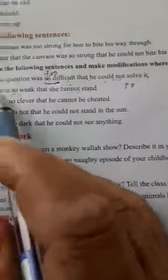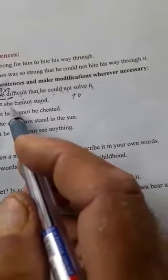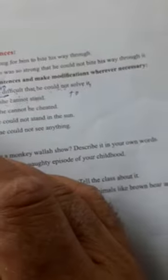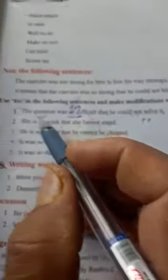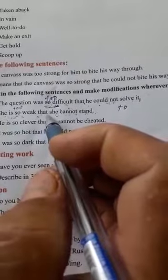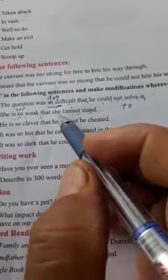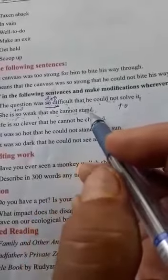Next question ہے: She is so weak that she cannot stand. So کی جگہ ہم TOO لکھیں گے۔ وہ اتنی کمزور ہے that she cannot stand, کہ وہ کھڑی نہیں ہو سکتی ہے۔